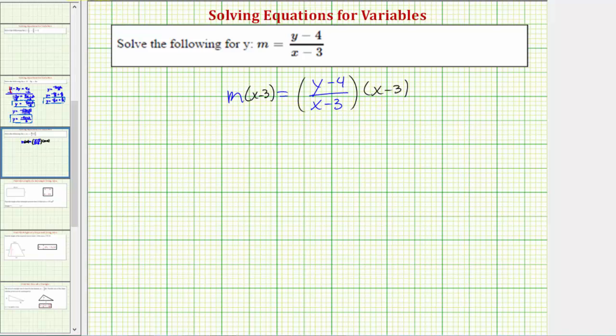Now, looking at the right side of the equation, notice how before multiplying, we can simplify. The numerator and denominator share a common factor of x minus three.